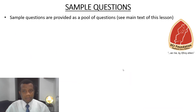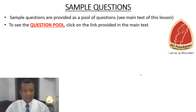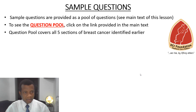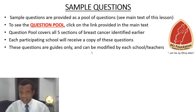Some of these sample questions are provided in a pool. We insist and strongly recommend that every school and every teacher take their questions from this pool. Each pool is divided into sections — you take your question from the pool as needed. If you click on the link in the main text, you'll see that pool. It covers all six sections for cervical cancer — there's an error in that text that says five. Each school will receive a copy of the questions. The questions are just guides, but you can modify them to suit what you want.